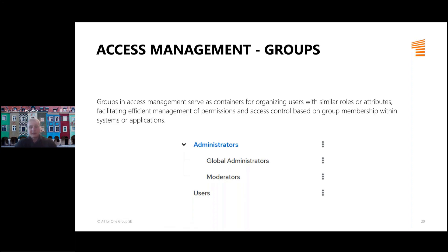You can authorize users based on roles assigned to groups or attributes, and you can also create organization structures. When you have users from multiple organizations, you can map them to groups, and your application can verify if someone has access based on their organization membership. This is really helpful for large applications and multi-tenancy scenarios.